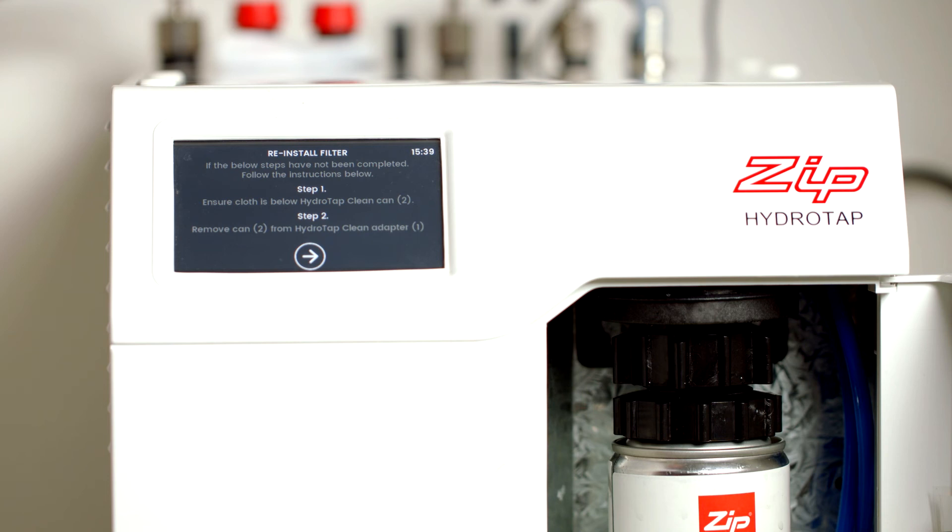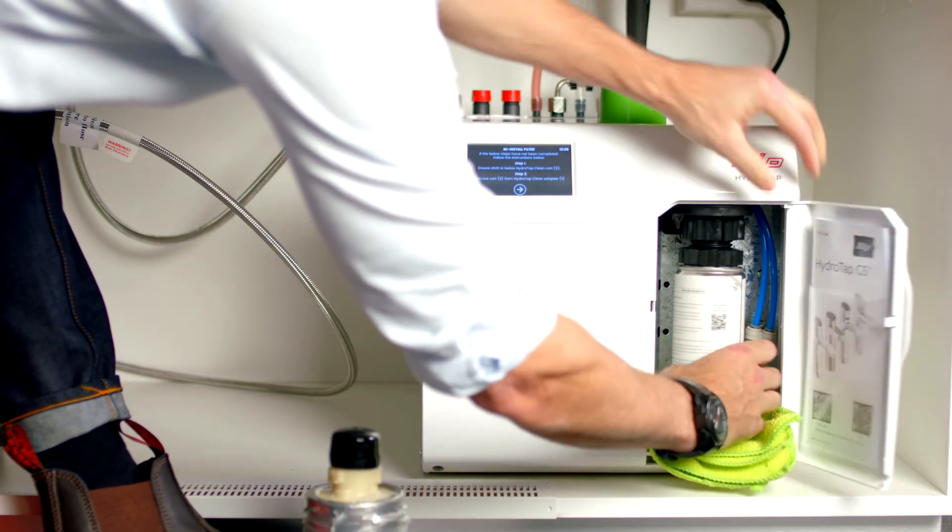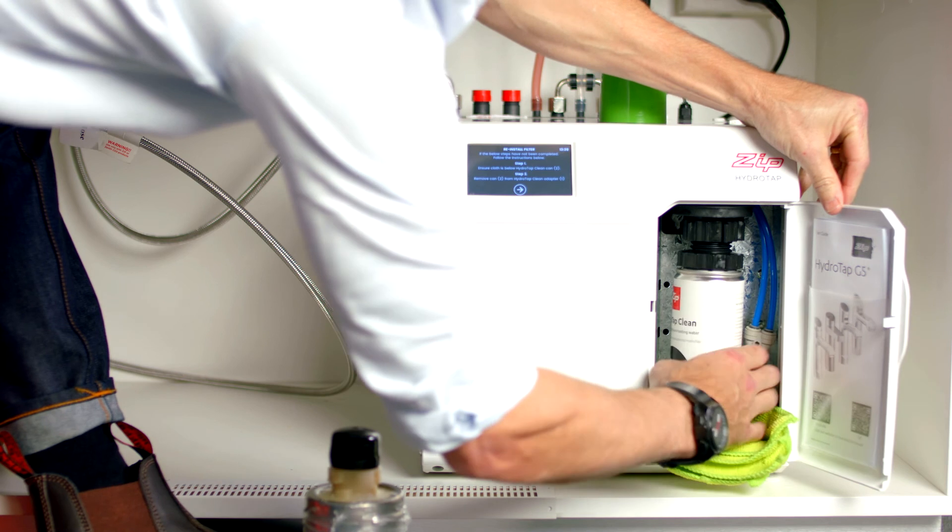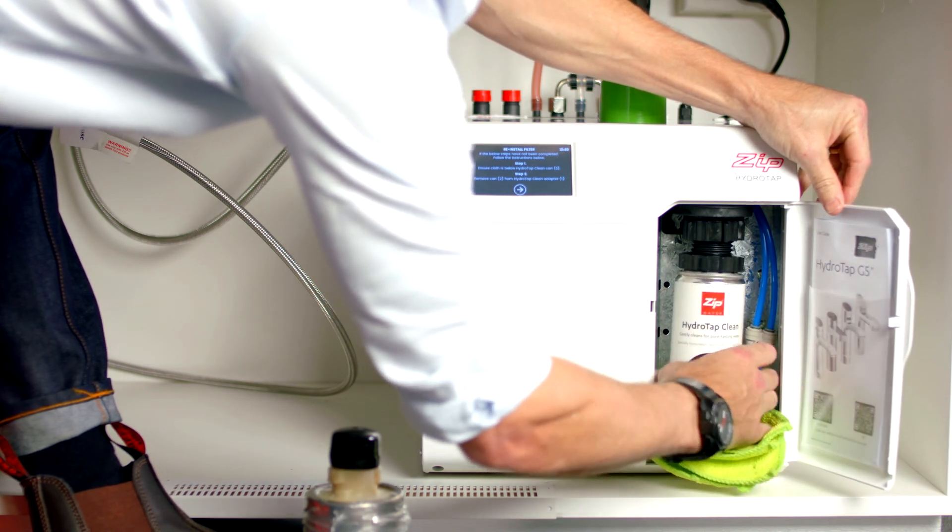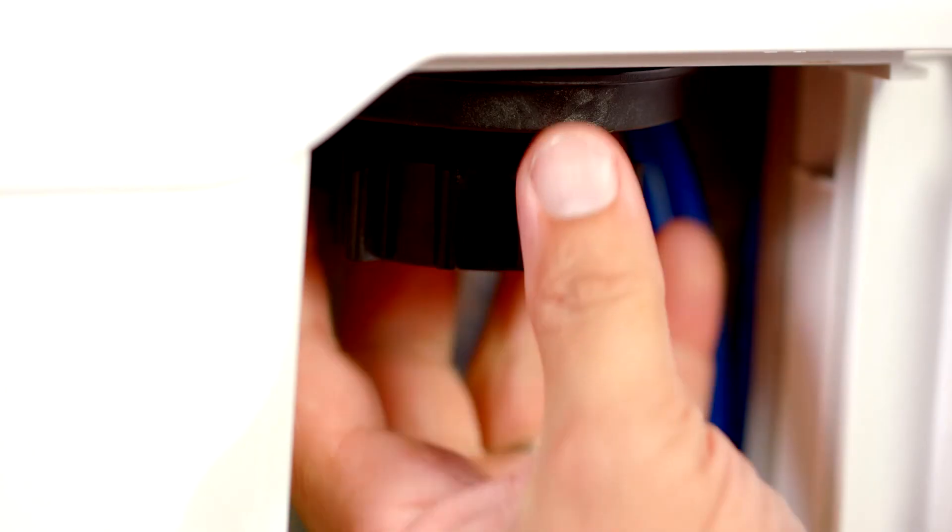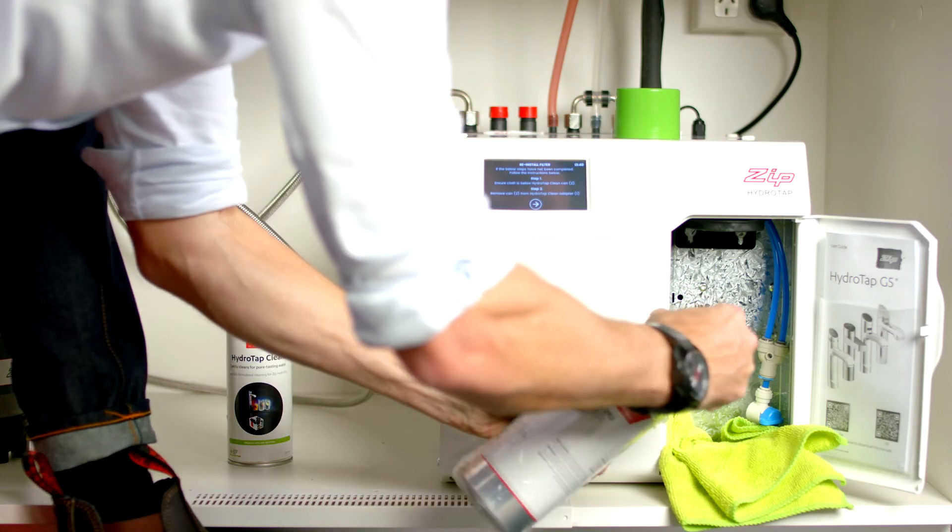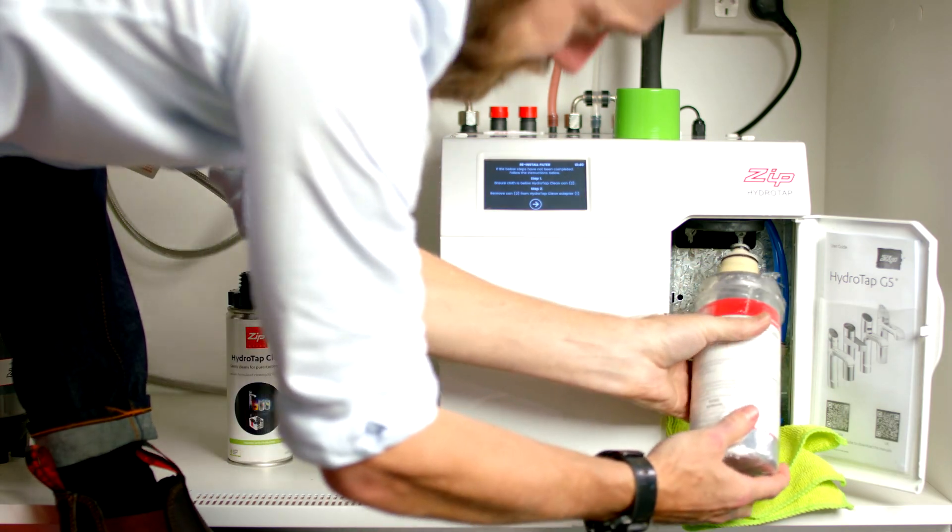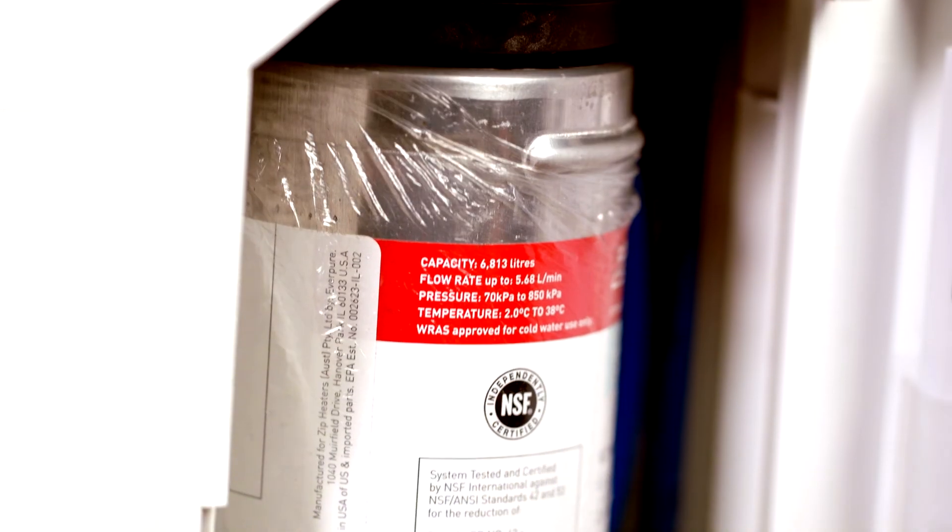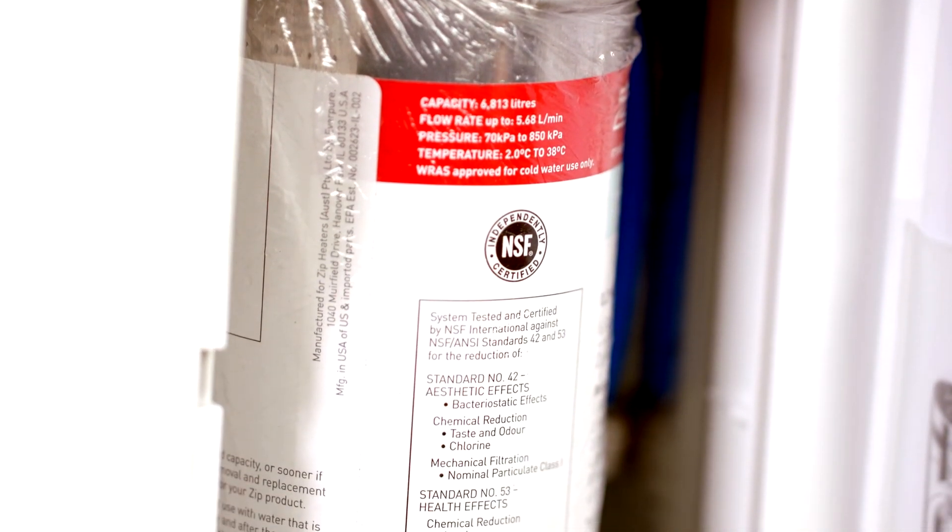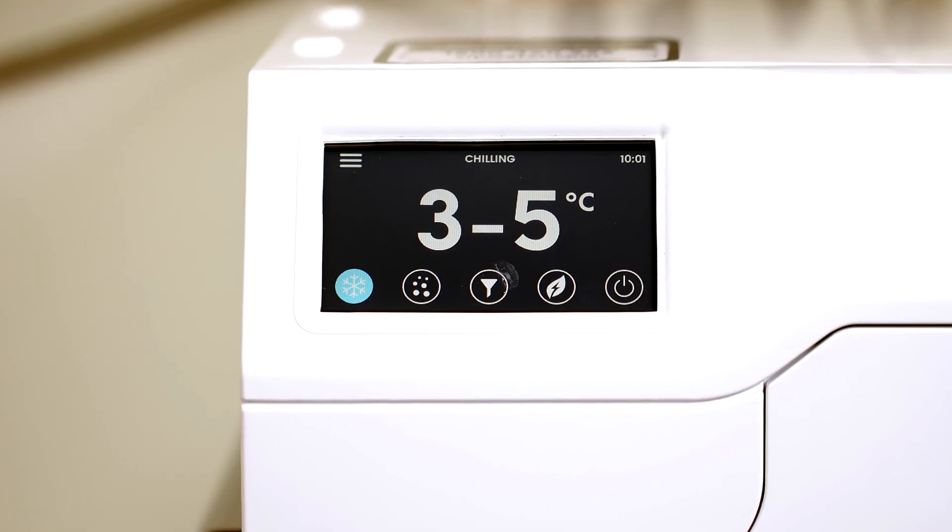Remove them both separately, can first, then adapter. Both these can be put into recycling. Next, remove the dust cap from the filter and reinstall the filter to the filter head. Mop up any spilt water with the cloth and remove the cloth. Once completed, the HydraTap will start to operate.